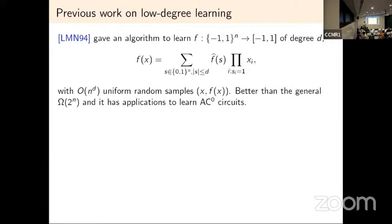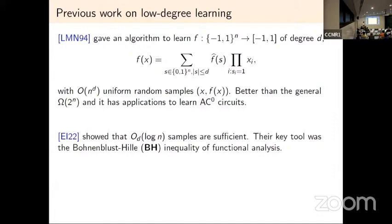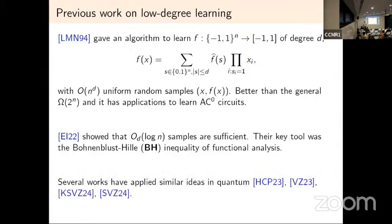There were many applications but no improvement on the algorithm itself. This was done by Eskenazi and Ioannis-Avili two years ago, showing that with only log n samples you can learn these functions. The reason it took so long was that we were missing a tool from functional analysis: the Bonami-Beckner inequalities. Since then, many people have tried to extend these ideas of low-degree learning using Bonami-Beckner inequalities to other settings, including learning quantum objects.